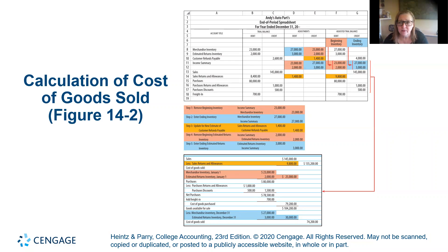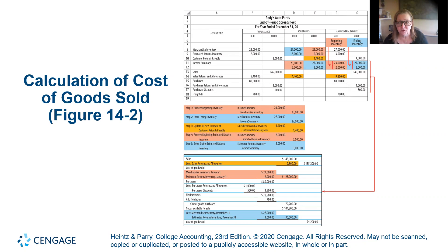We've talked about this in a previous chapter — the goods available are either in one of two places: they're still here in our ending inventory, or they're in cost of goods sold. They either got sold or they didn't. If they got sold, their cost should be in cost of goods sold. If they did not get sold, their cost should be in ending inventory. So you have to pull all these accumulated data points into your income statement to get it to come out correctly, and we're going to work some of those in the exercises.